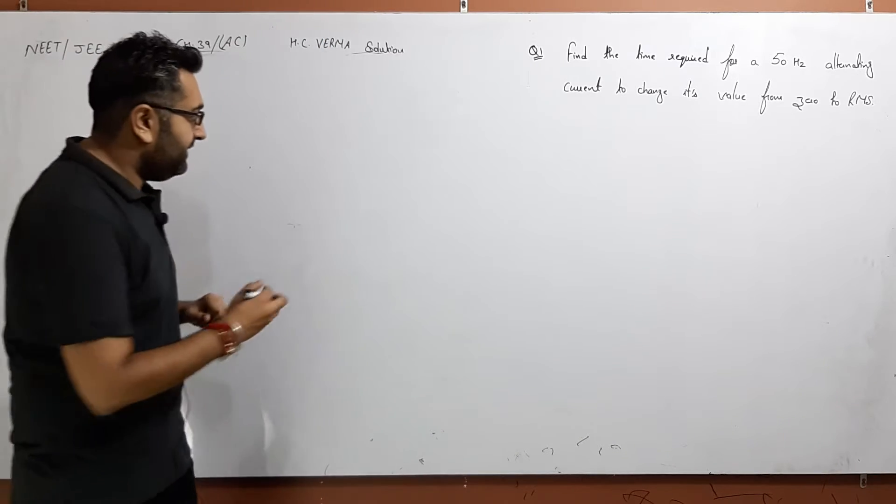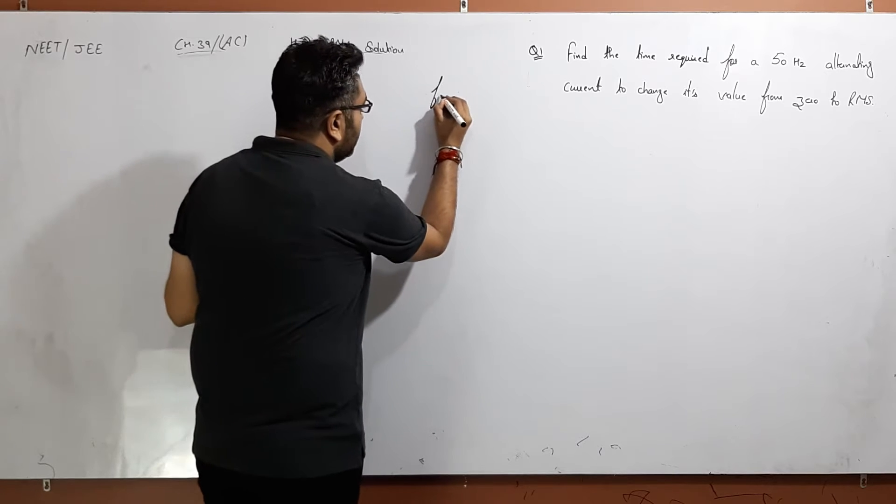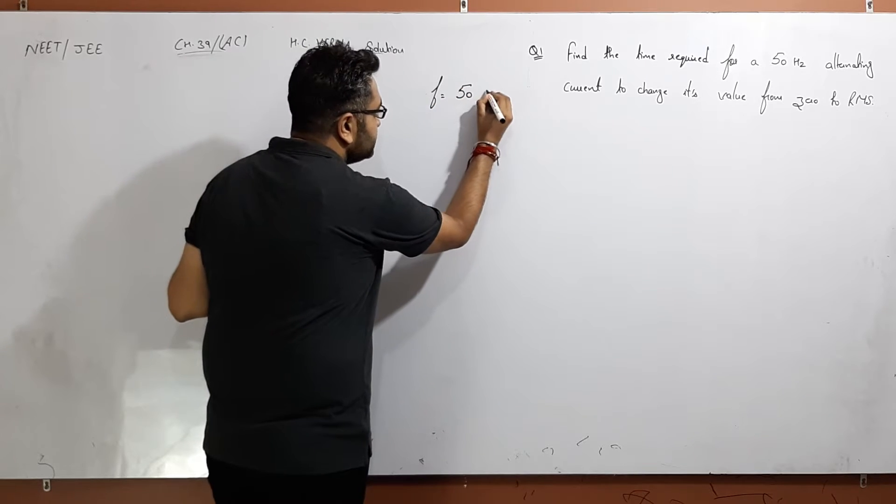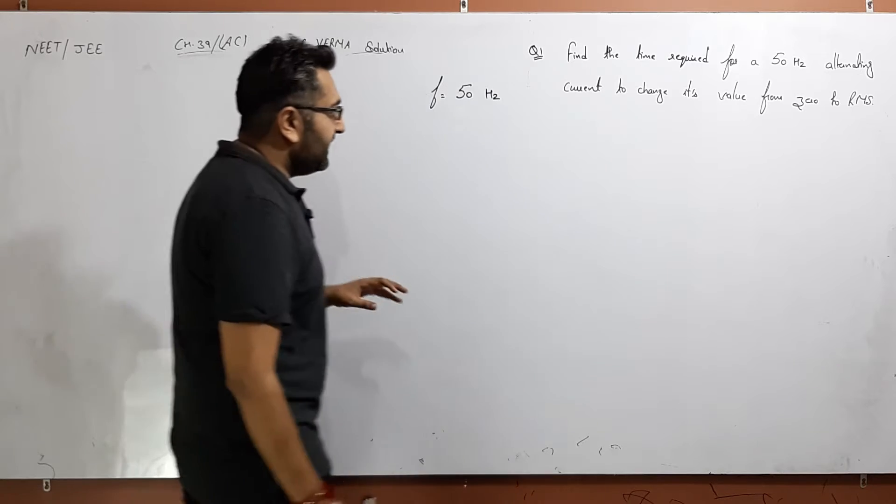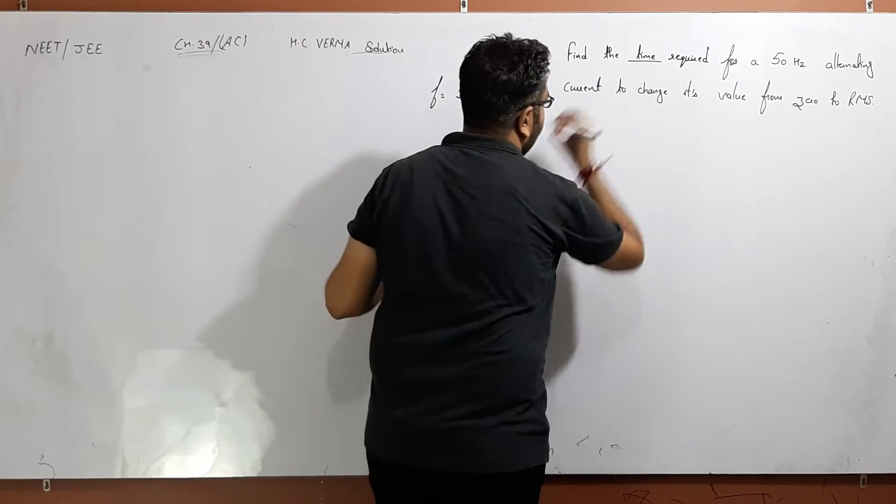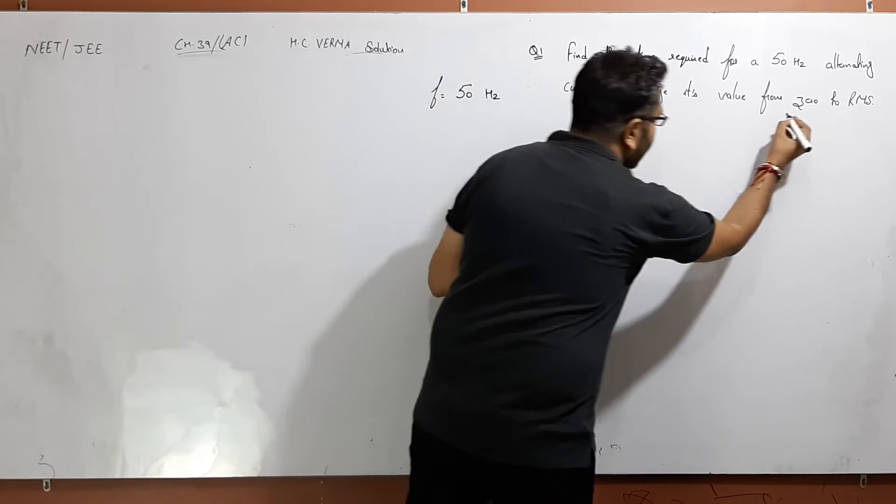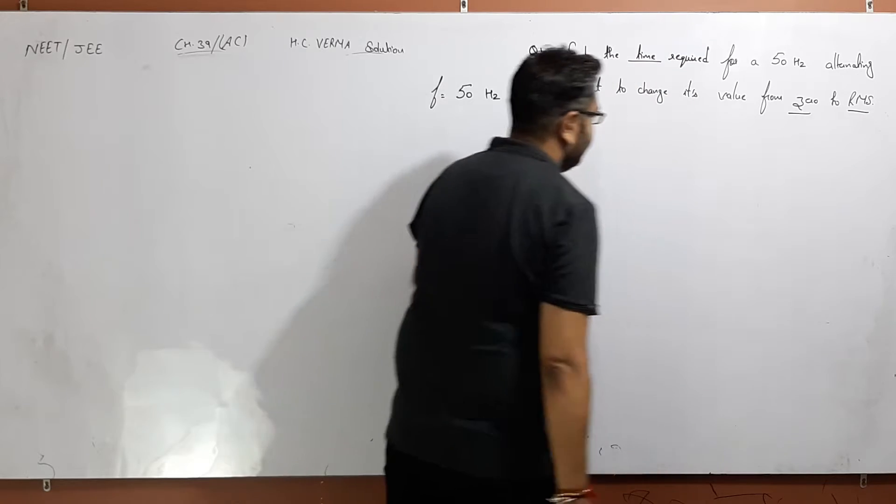We're going to see what is given. You have a frequency given which is equal to 50 Hertz. After that, you have to find the time when the current value changes from 0 to RMS.